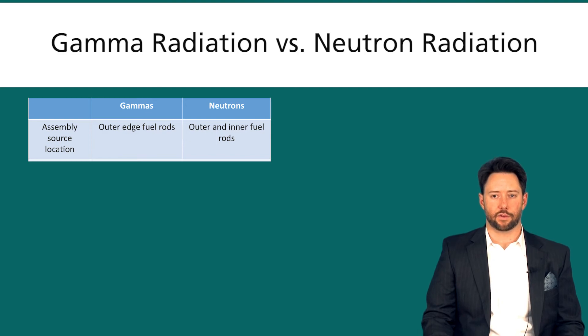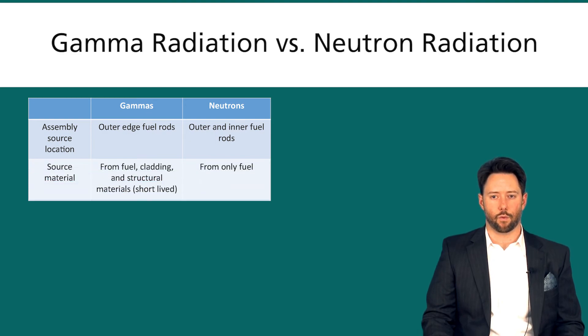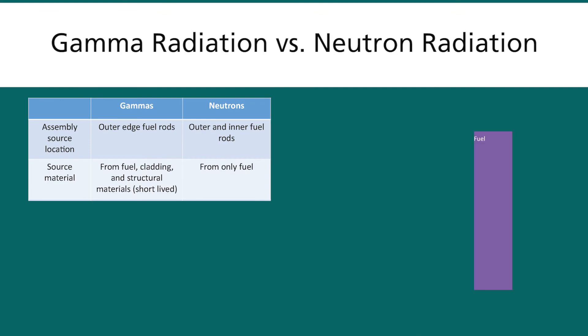The next thing we will take a look at is the source material of the radiation. We mentioned before that gamma rays come from both the fuel, the cladding, and other structural materials within the fuel assembly. And so you are getting radiation from two sources there: the fuel and the structural materials. The structural material radiation is short-lived but it is still there at the beginning.